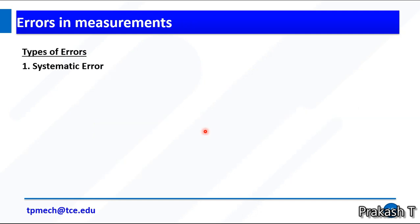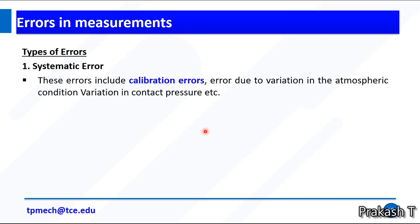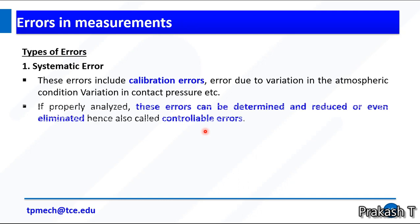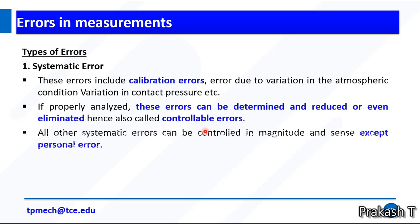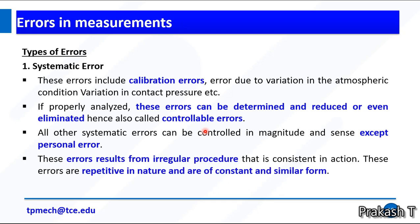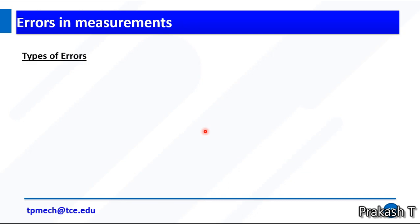Types of errors: there are three types. Number one is systematic error. These errors include calibration errors due to variation in atmospheric conditions, variation in contact pressure, etc. If properly analyzed, these errors can be determined and reduced or even eliminated. Systematic errors are also called controlled errors. All other systematic errors can be controlled except personal errors. These errors result from irregular procedure that is consistent in action. These errors are repetitive in nature and are of constant and similar form.